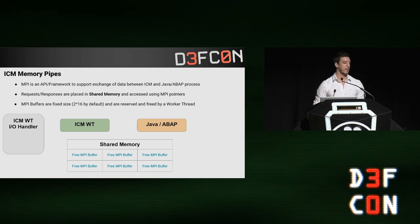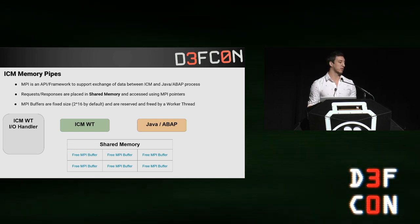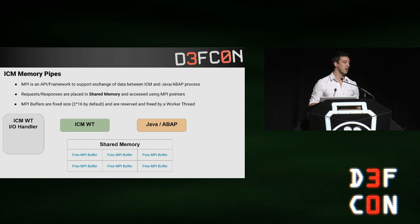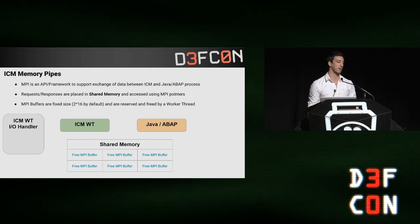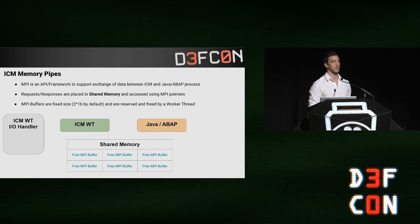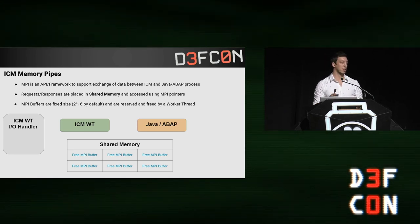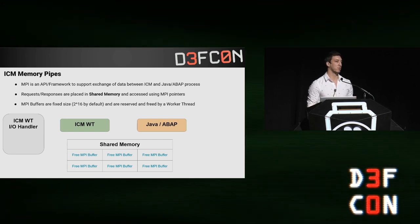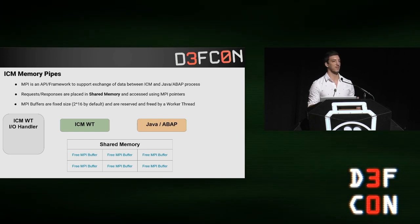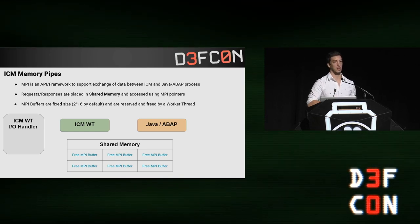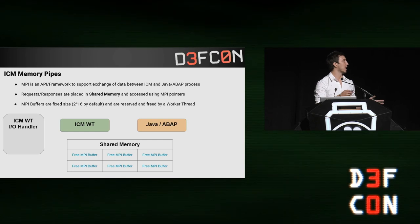What are these memory pipes? MPI, as SAP calls it, is a framework that supports exchange of data between the SAP ICM and the worker process, which can be Java or ABAP. The idea is this framework sends data without copying entire requests and responses, because that wouldn't be efficient. MPI uses shared memory with MPI buffers — fixed-size buffers of 65 kilobytes stored in shared memory — and instead of copying data, it just sends a pointer called an MPI pointer to these MPI buffers. It uses an MPI handler class to manage all these communications.